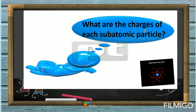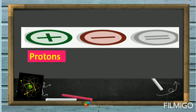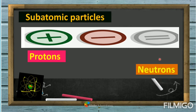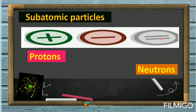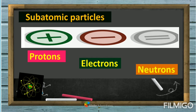So what are the charges of each subatomic particle? A positive charge for protons — correct. An equal or zero charge for neutrons — correct. And a negative charge for electrons. These are the subatomic particles of the atom.